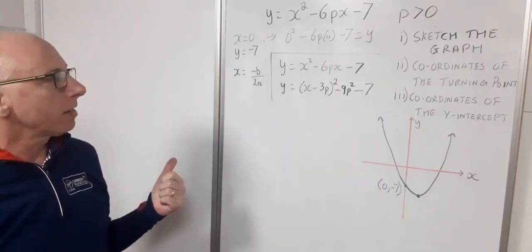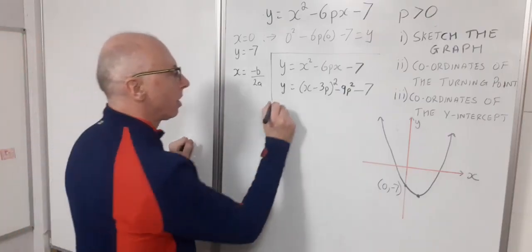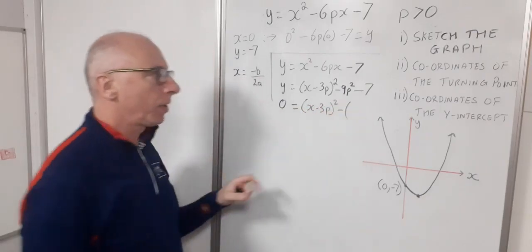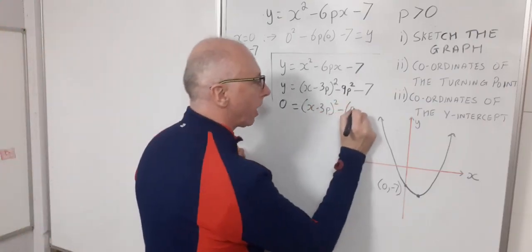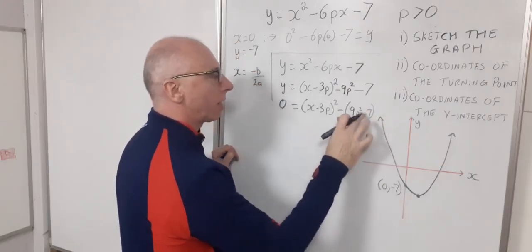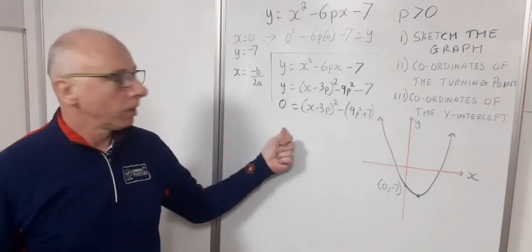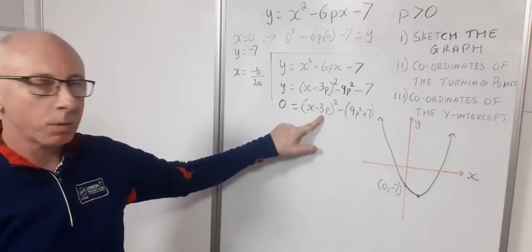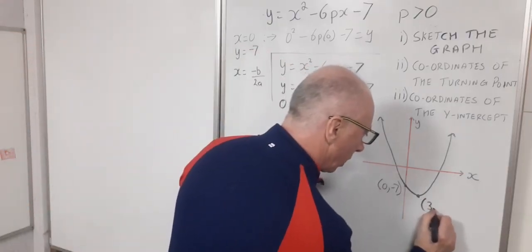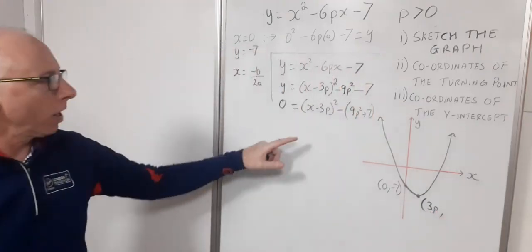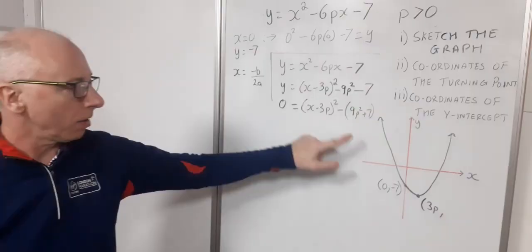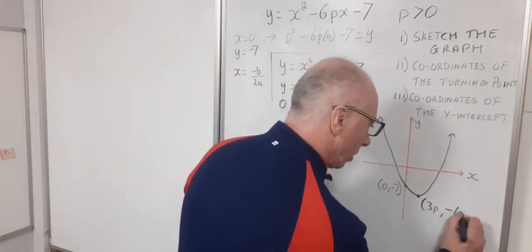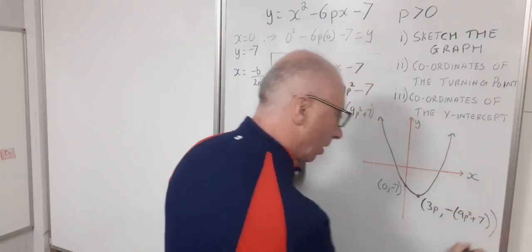So now what we need to do is set this to 0. So 0 equals x minus 3p squared minus. And now put this all in brackets here. I've got 9p squared and then plus 7. Because I've got minus and a minus, I'll put that to a plus. So now using this square form of my quadratic, I can see when this becomes 0 at x equals 3p. So my x-coordinate is going to be 3p. Now my y-coordinate is going to be all of this on my minimum. So I've got minus 9p squared plus 7.